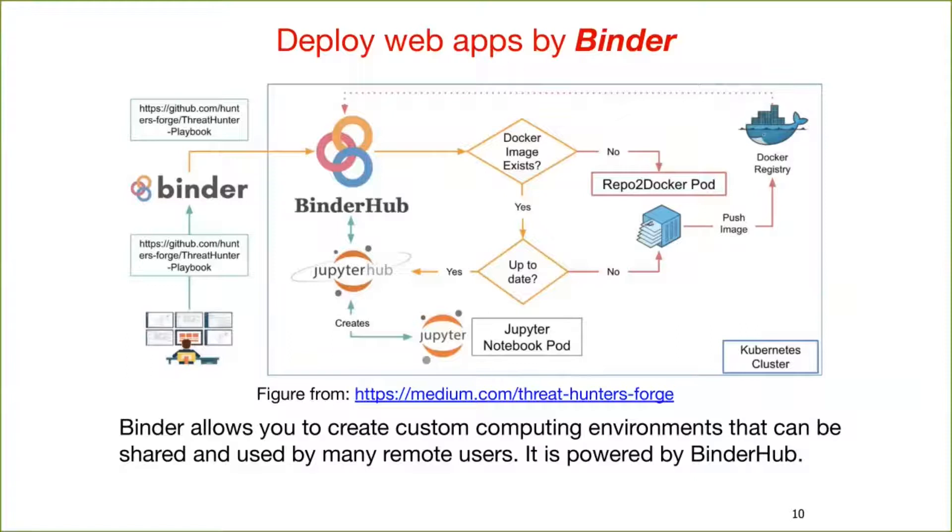In order to distribute the web apps, we use the Binder technology. Binder allows us to share web apps with many remote users. It is powered by BinderHub. The figure shows how BinderHub works. First, we need to initialize a public repository at GitHub, which contains the Jupyter Notebooks. Repo2Docker converts a public Git repository into a Docker image. Then, the Docker image will be hosted and run by JupyterHub. The user will get a URL link. When clicking the URL, the BinderHub will check whether the Docker image is up to date and then deploy it.